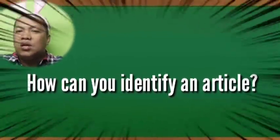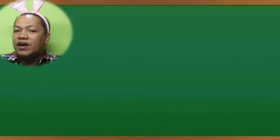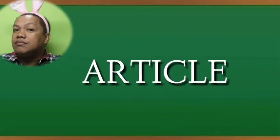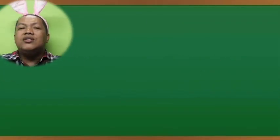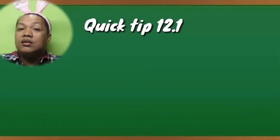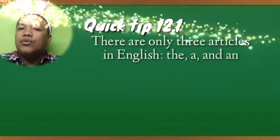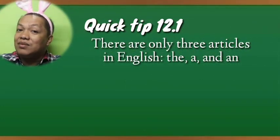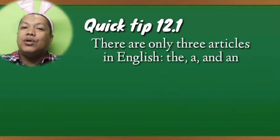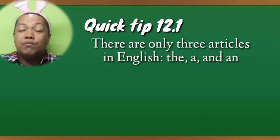How can you identify an article? What do you mean by article? Via this vlog you will learn more about what an article is in the sentence. Quick tip 12.1: there are only three articles in English — they are 'the,' 'a,' and 'an.' Those are the three articles that you need to examine and note per sentence that you will encounter.